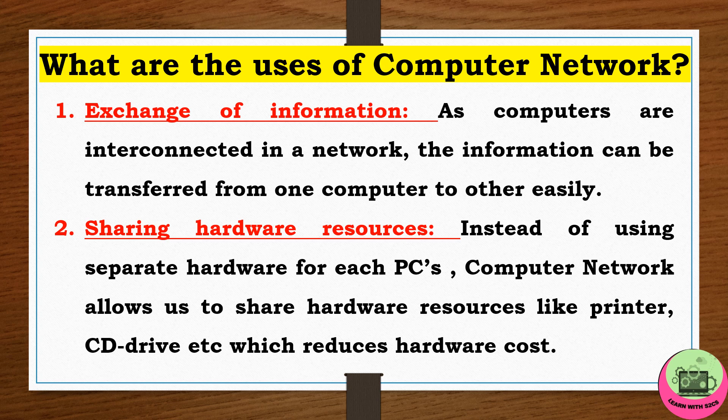Next, what are the uses of a computer network? The first use is exchange of information — if a network is formed, you can easily share or transfer information from one computer to another. The second use is sharing hardware resources. Instead of maintaining separate hardware for each PC, which increases cost, through a computer network you can share hardware resources like printers and CD drives, reducing hardware cost while allowing multiple users to share them simultaneously.